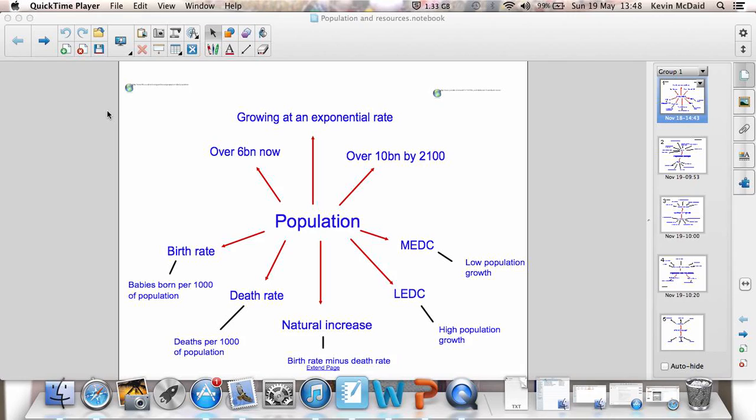Population. The population of the world is growing. It's growing very quickly. There are well over 6 billion people on the planet now, fast approaching 7 billion. By the year 2100, we're looking at over 10 billion.